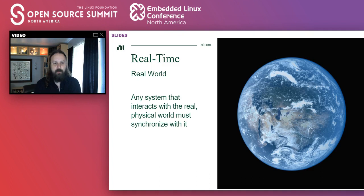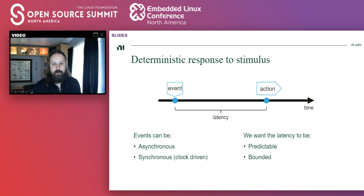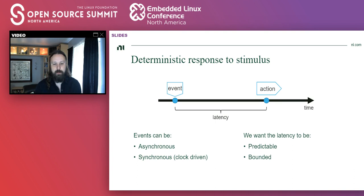So very broadly, in very general terms, a real-time system is a system that needs to interact with the real physical world. If you have a system that needs to interact with the real physical world, then you must have a way to synchronize with it. One of the most important attributes of a real-time application is having a deterministic response to a stimulus. We measure the time between an event and the action taken by the system as latency, and we want that latency to be predictable — and even more importantly, bounded — so we can design our real-time application to meet the demands of synchronizing with the real physical world.